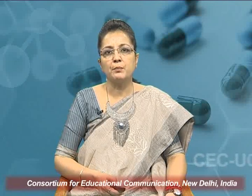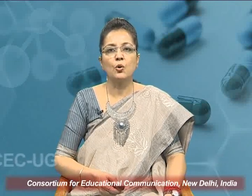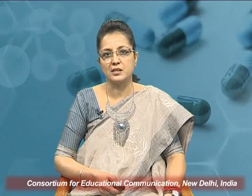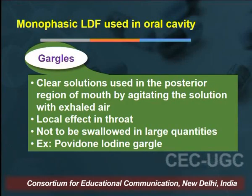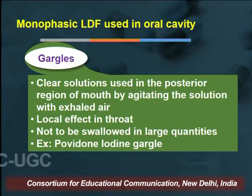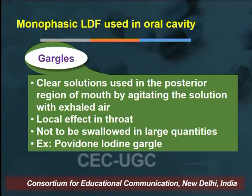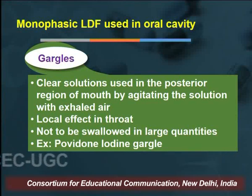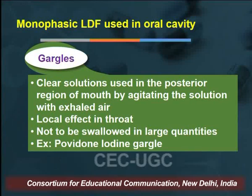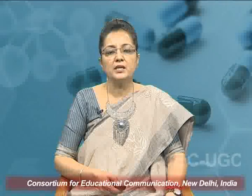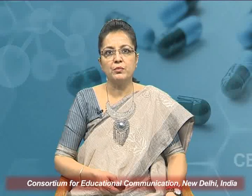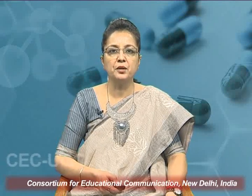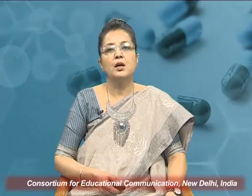The third type under monophasic liquids for the oral cavity are gargles. These are clear solutions used in the posterior region of the mouth by agitating the solution with exhaled air. They generally have local effect in the throat and should not be swallowed in larger quantities. Example: povidone-iodine gargle.